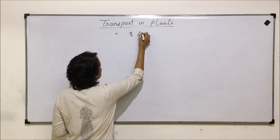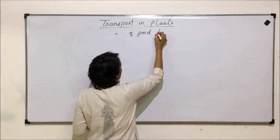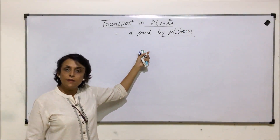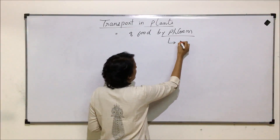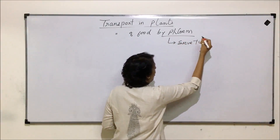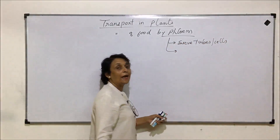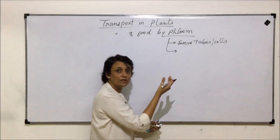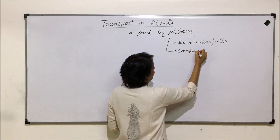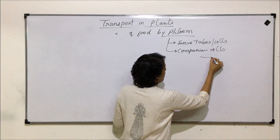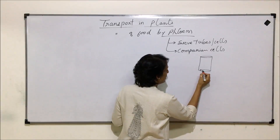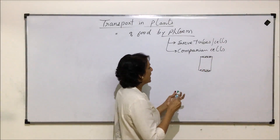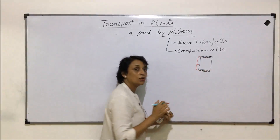The food gets transported by phloem. Now to understand the structure of the phloem — we have already done this earlier but let us quickly go over it. In phloem there are sieve tubes or sieve cells. At maturity, these sieve cells and sieve tubes get enucleated and they have companion cells, or albuminous cells in case of gymnosperms. If we just draw one sieve tube, it is a little elongated structure and the ends have perforated plates known as sieve plates, and along with every sieve tube there is a companion cell.